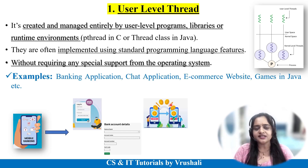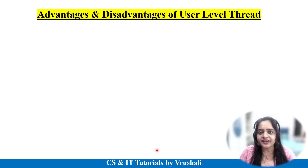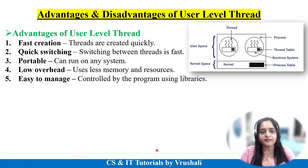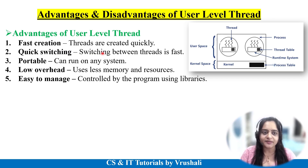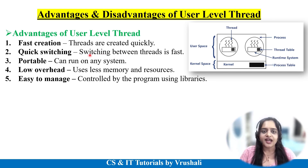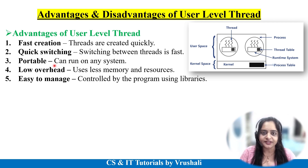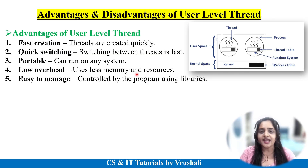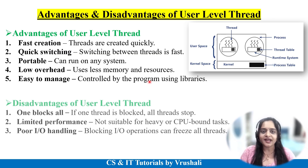Different apps developed in Java — like chat applications, e-commerce websites, and games — use user level threads. The main advantages are: you can create these threads quickly because they have inbuilt functionality in programming languages; all threads share the same memory with the process, so switching between threads is faster. Java is a portable programming language — you can execute a Java program on any operating system, making threads also portable. They require less memory and resources because they don't interact with the operating system. User level threads are completely controlled by the program using different libraries.